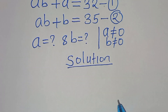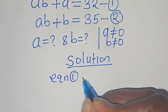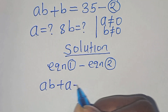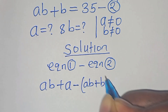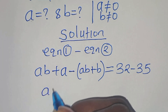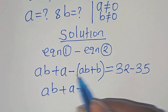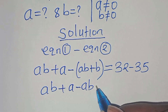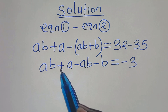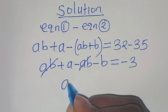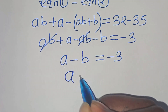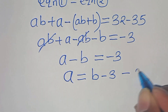The first step: let's subtract equation 1 from equation 2. Therefore we have ab plus a, subtract ab plus b, this is equal to 2 minus 5. Opening the parentheses: ab plus a, minus ab, minus b, this equals 2 minus 5, which is equal to minus 3. So a minus b equals minus 3, which means a is equal to b minus 3. Let's call this equation 3.